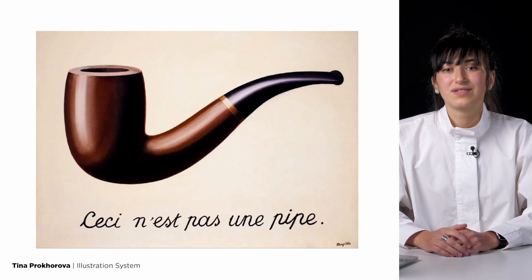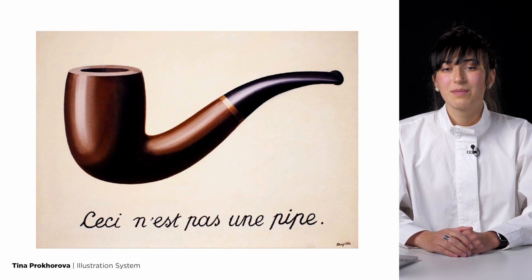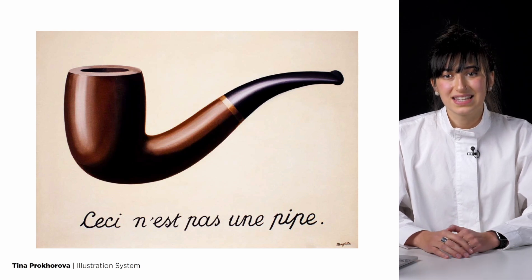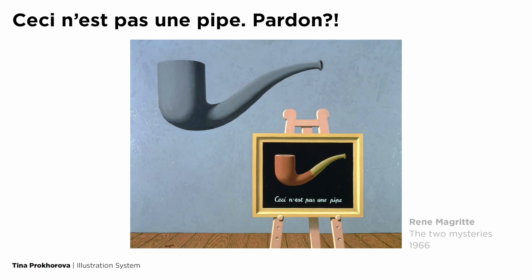René Magritte writes the signature: 'This is not a pipe.' But he can't fool us — we can see this is a pipe. Magritte repeats this in his next work, and indeed he gives us a hint. After looking at it for a few seconds, we get an insight. Of course, this is a portrait of a pipe.